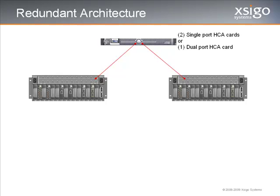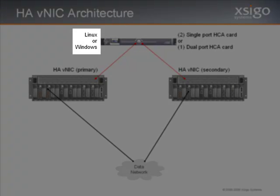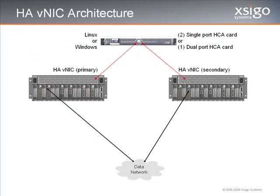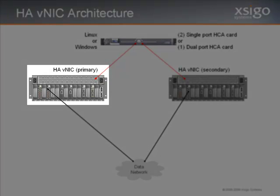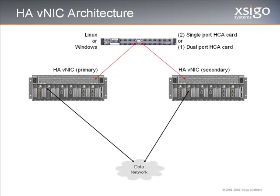Now we can review the different H-A configurations used for Virtual I.O. The first configuration is the H-AVNIC architecture. The H-AVNIC is a feature of the SEGO I.O. director. Note that this feature only applies to Linux and Windows hosts. The H-AVNIC operates in an active-passive mode. The primary interface carries all the traffic until some failure causes the interface to go down, then the secondary interface immediately begins to carry traffic. The users will never know a failure has occurred. We will configure an H-AVNIC later in this session.